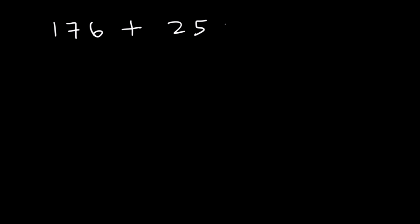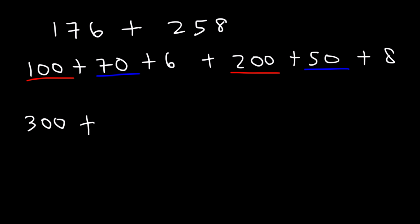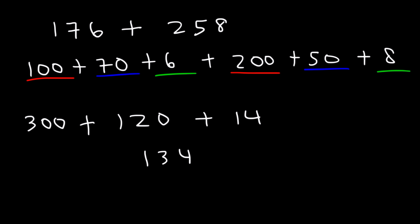Now let's try some examples involving three-digit numbers. Go ahead and add 176 and 258. So 176 is 100 plus 70 plus 6, and 258 is 200 plus 50 plus 8. First, add 100 and 200 — that's 300. Now 70 plus 50: 7 plus 5 is 12, so 70 plus 50 is 120. And 6 plus 8 is 14. 120 plus 14 is 134. Add 300 to 134 and you get 434.